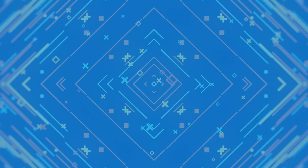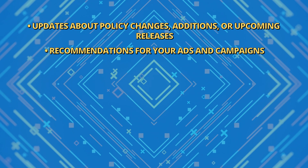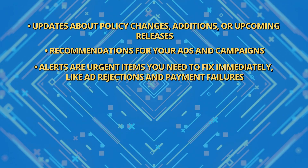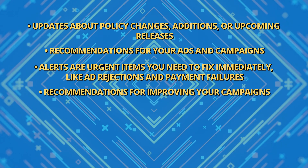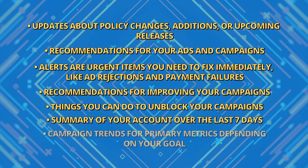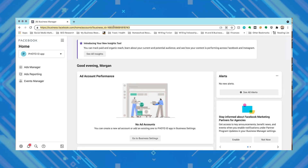Anytime you visit your account, you'll land on the overview page, which shows you updates about policy changes, additions, or upcoming releases; recommendations for your ads and your campaigns; alerts, which are urgent items that you need to fix immediately, like ad rejections and payment failures; recommendations for improving your campaigns; things you can do to unblock your campaigns; a summary of your account over the last seven days; and campaign trends for primary metrics depending on your goal. The alerts and recommendations that you see are customized to you and are always relevant to your account. This is helpful to identify things that a more trained eye would be able to see, but maybe you'd miss. You've still got someone looking out for you this way.